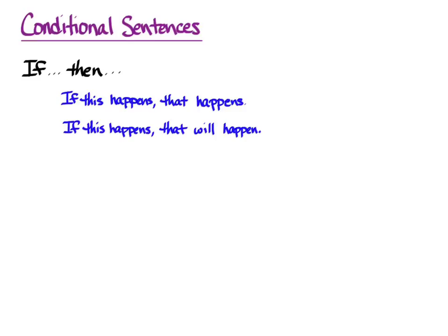That difference in meaning took a change in tense in English from 'that happens' to 'that will happen' in the then-clause. Conditional sentences are even one of the places where English still uses the subjunctive mood. 'If this were happening, that would be happening' — the if-clause has the English subjunctive, and the assumption behind the sentence is that the action in the if-clause isn't happening, but the stuff in the then-clause would be if the stuff in the if-clause were happening.